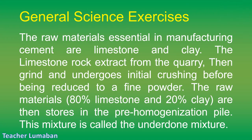The correct answer is Letter D: limestone and clay. The raw materials essential in manufacturing cement are limestone and clay. The limestone rock is extracted from the quarry, then ground and undergoes initial crushing before being reduced to a fine powder. The raw materials — 80% limestone and 20% clay — are then stored in the pre-homogenization pile. This mixture is called the raw mixture.